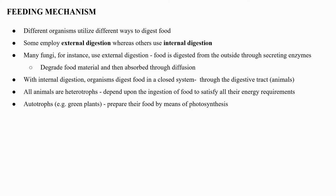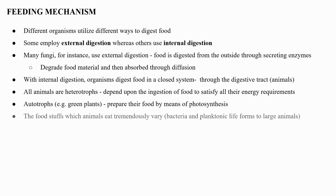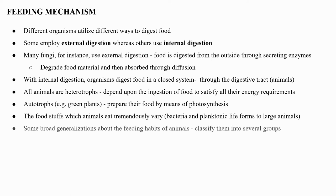This contrasts with autotrophs such as green plants, which are able to prepare their food by means of photosynthesis. The food stuffs which animals eat are tremendously varied, ranging from bacteria and planktonic life forms to large animals. It is possible to make some broad generalizations about the feeding habits of animals and to classify them into several groups.